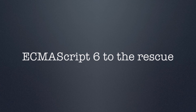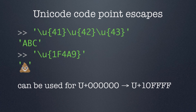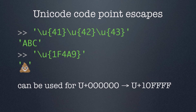Luckily, we have ECMAScript 6 coming up, and it will introduce some new features that will make it easier to work with astral Unicode symbols in JavaScript. The first thing it will introduce is Unicode code point escapes. They look similar to Unicode escapes we've seen earlier, except now there's a backslash followed by a U, followed by braces, and within those braces you can use up to six hexadecimal digits — that should be enough to represent all possible Unicode code points. By using this type of escape sequence, you can represent any Unicode symbol based on its code point without having to worry about calculating surrogate pairs for astral symbols.